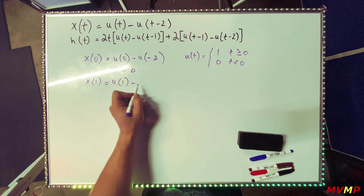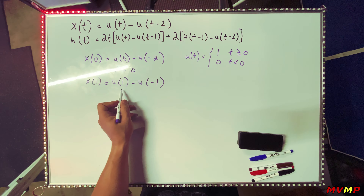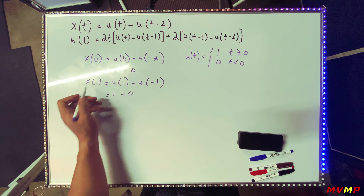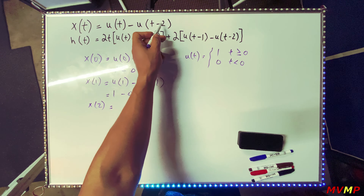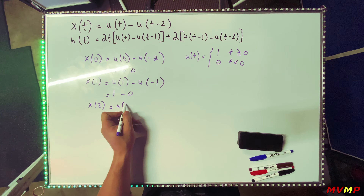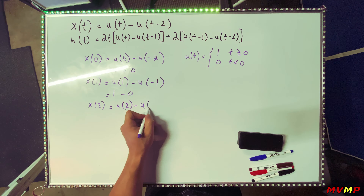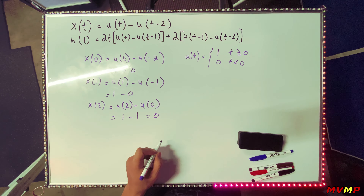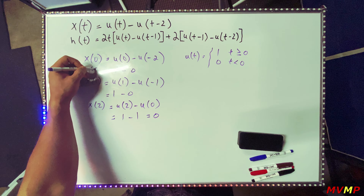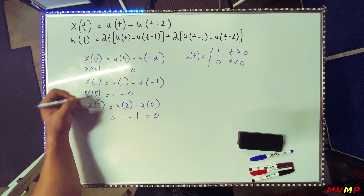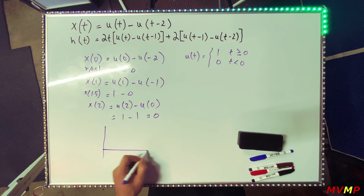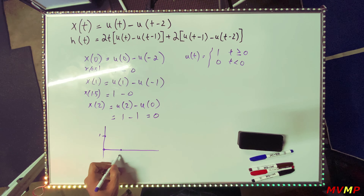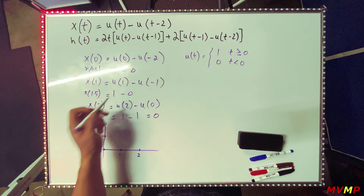For x(1): u(1) is one, and u(1−2) = u(−1) is zero, so x(1) = 1. Now for x(2), because this is a shift of two: u(2−2) = u(0) = 1, and u(2) = 1, so it's 1 minus 1 which equals zero. So at zero we have one, and at one we have one.